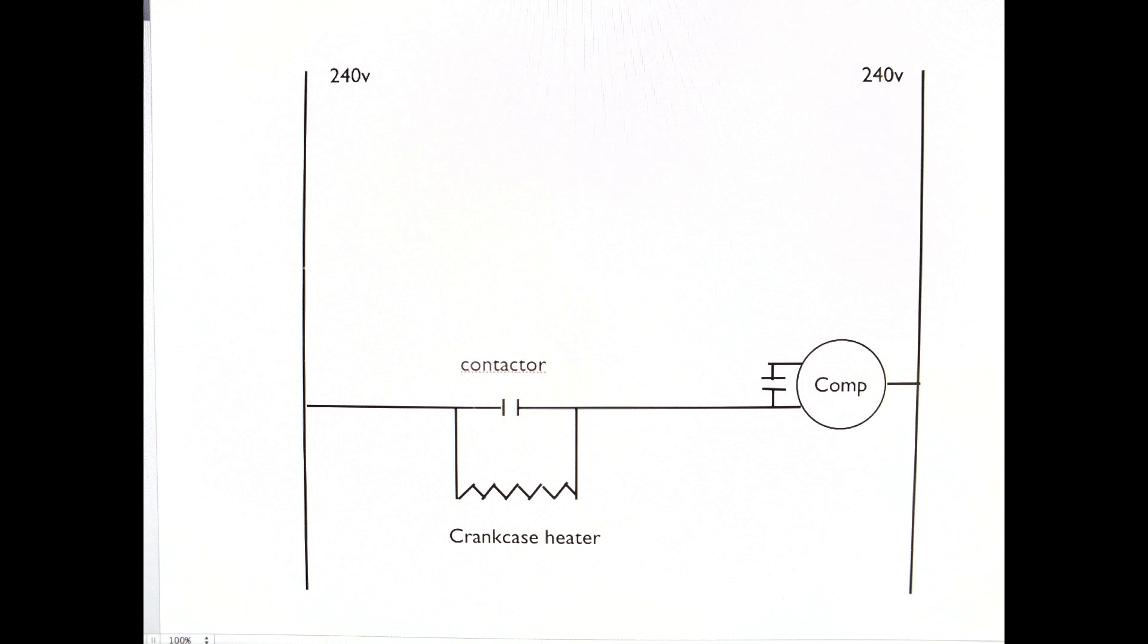If you look at that crankcase heater now, it's wired across those open switches. So power will go from the 240 on the left through the crankcase heater, through the windings in the compressor, and back to the other side of 240. Now if it's a small heater, it'll do that. It won't try to start the compressor or anything like that because it doesn't let enough power through. There's only a small amount comes through.